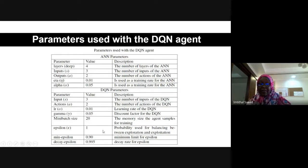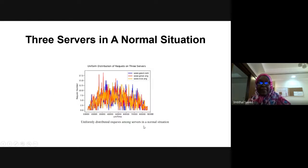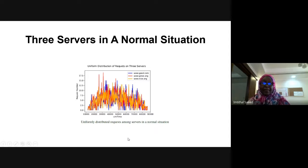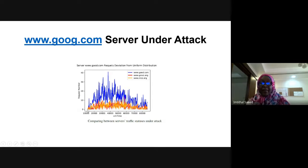These are the results from the project. For network traffic before and after attack: in a normal situation the traffic at all servers is uniformly distributed in terms of number of requests. When one server (www.good.com) is under attack, the requests at the other servers are not uniformly distributed and there is a deviation in the requests at www.good.com.